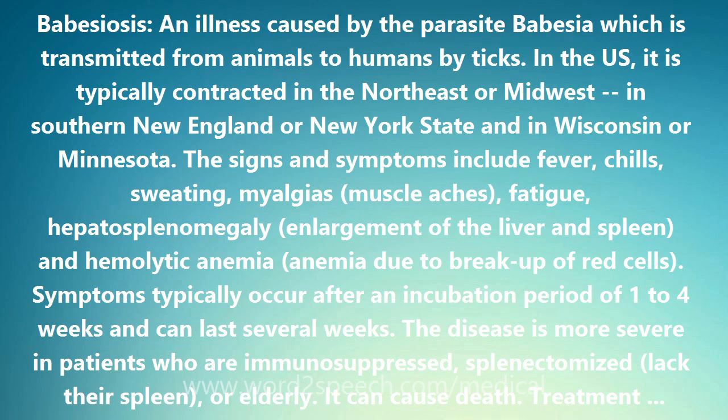Humans enter the cycle when bitten by infected ticks. During a blood meal, a Babesia-infected tick introduces sporozoites into the human host. Sporozoites enter erythrocytes and undergo asexual replication (budding). Multiplication of the blood stage parasites is responsible for the clinical manifestations of the disease.